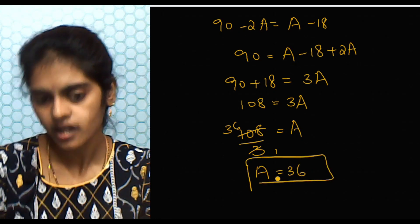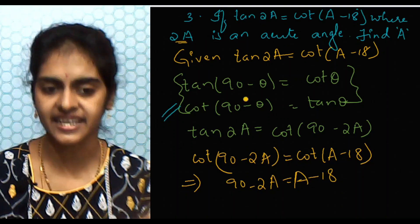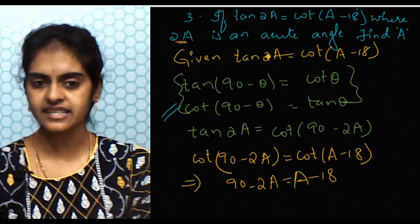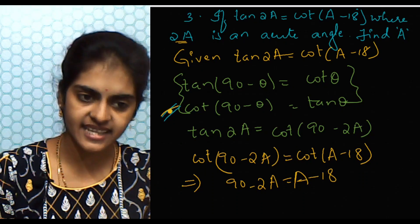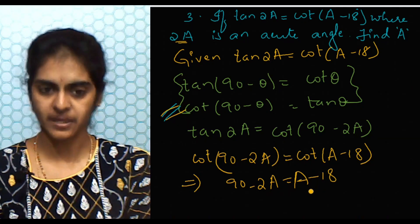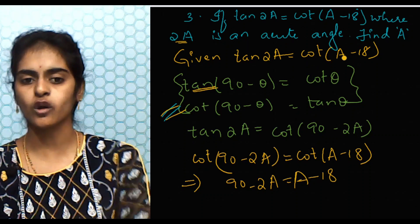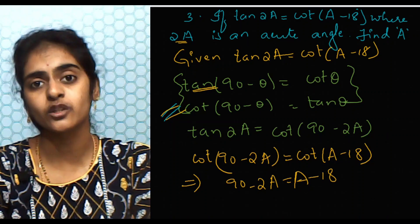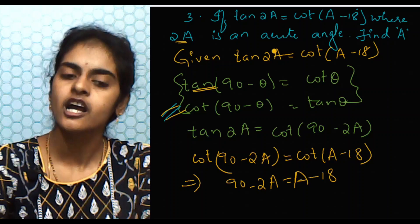To summarize: tan and cot are complementary — tan(90 − θ) = cot θ and cot(90 − θ) = tan θ. Using the second identity, tan 2A = cot(90 − 2A), and both sides become cot, so we equate the angles to get A = 36. An alternative second method is to change the cot term to tan using the first identity — in maths any method is correct provided you stick to the basics.